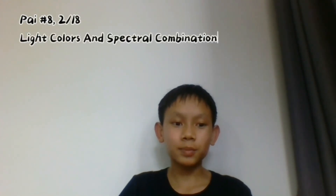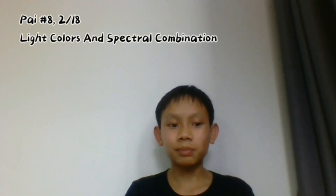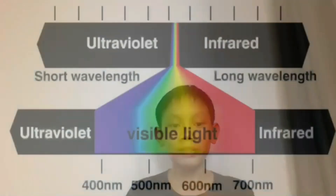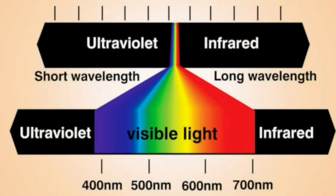Plants exposed to various light spectra show different responses. White light, which covers the full spectrum, enables balanced growth and development, closely similar to natural sunlight. Ultraviolet light, found beyond the visible range, can act as a stressor, prompting plants to produce protective compounds, therefore increasing their resilience.